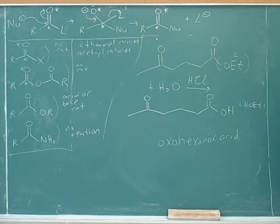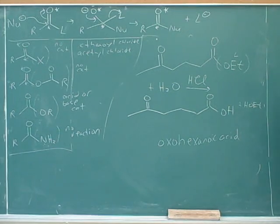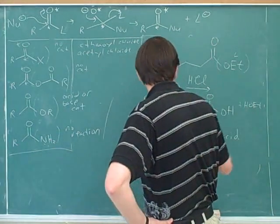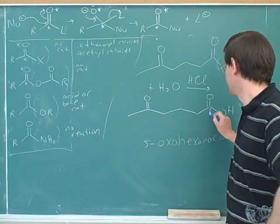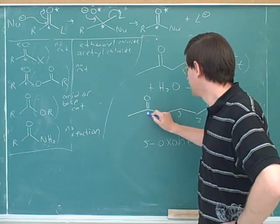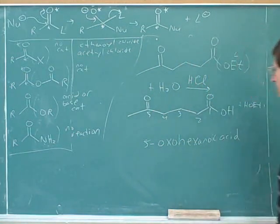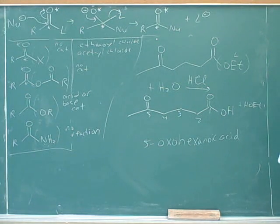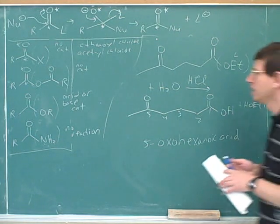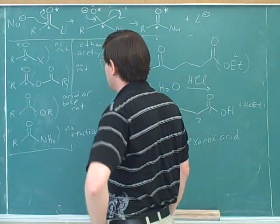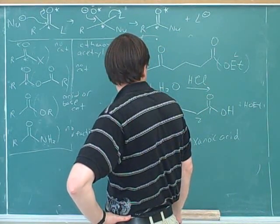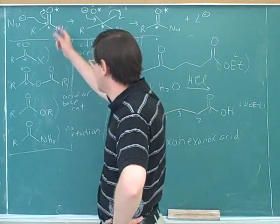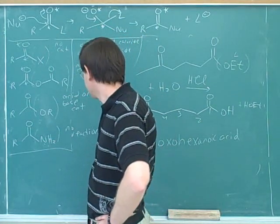Do we have to indicate numerically where the ketone is located? Yes. We have to start the numbering over at the carboxylic acid end to give that terminal group the lowest possible number. So it would be 5-oxo hexanoic acid. That's a pretty typical problem. So what we've seen here is that adding water, we can add water to any of these to make carboxylic acids.